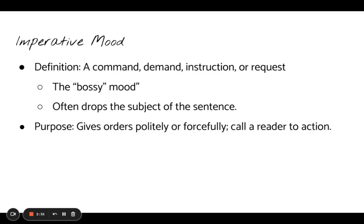The next mood is the imperative mood. An imperative sentence gives a command, a demand, an instruction, or a request. We call this the bossy mood, because it's giving us commands and instructions — being the boss of us and telling us what to do. You might remember from parts of a sentence that imperative sentences often do not have a subject, because if I'm giving the command 'do your homework,' adding the subject would give you 'you do your homework,' which sometimes sounds like a statement rather than a command. The purpose of using the imperative mood in writing is to give orders politely or forcefully, or to call a reader into action, like at the end of a research paper where we need to tell our audience what to do with what they just learned.